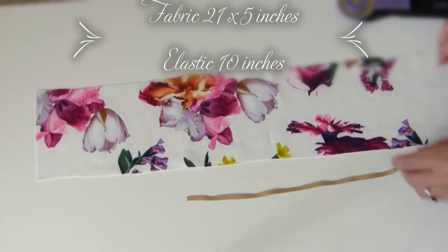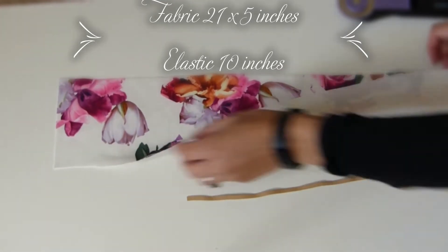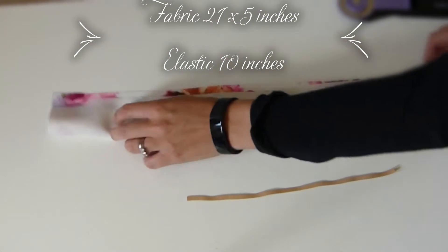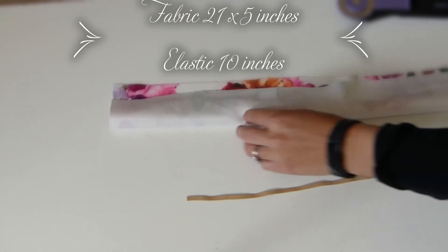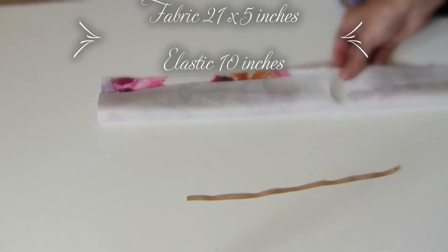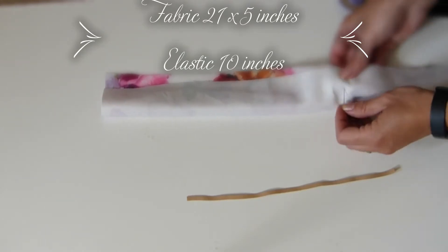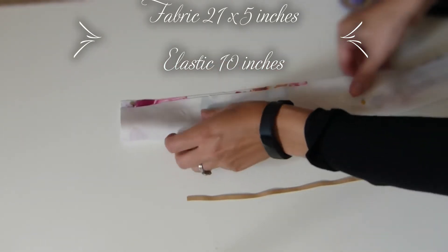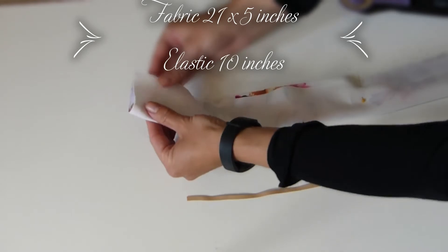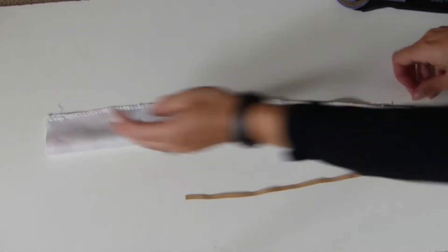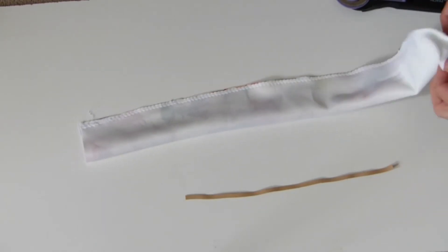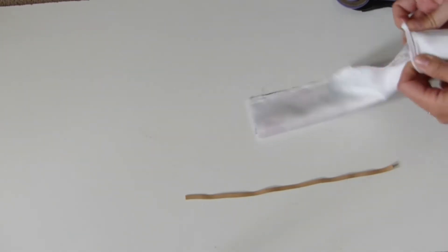So what you want to do is fold that in half and pin it. You don't have to use pins, whatever you feel comfortable with. And then, once you've done that, we're going to sew along this edge. So I've stitched along one side and now I'm going to fold that the right way around.